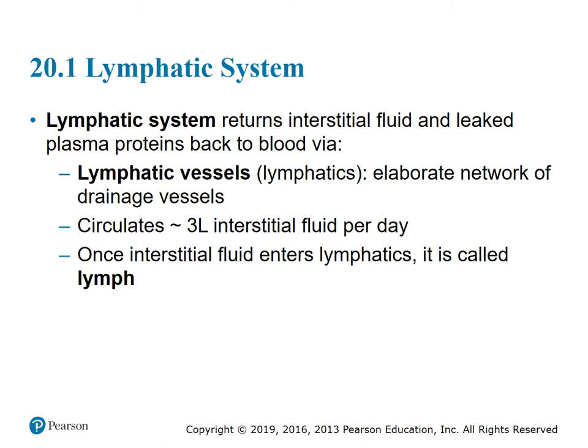Section 20.1: Lymphatic system. The lymphatic system returns interstitial fluid and leaked plasma proteins back to the blood via the lymphatic vessels, which form an elaborate network of drainage vessels. It circulates about three liters of interstitial fluid per day. Once interstitial fluid enters the lymphatics, it is called lymph.